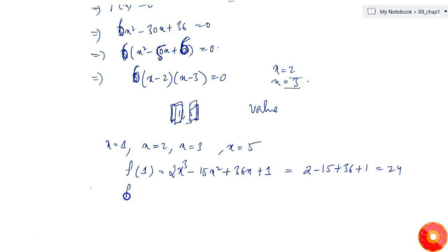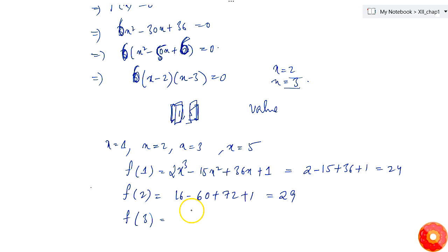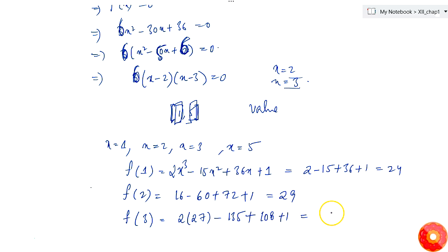f(2) = 16 - 60 + 72 + 1 = 29. Now f(3) = 2(27) - 15(9) + 36(3) + 1 = 54 - 135 + 108 + 1 = 28.